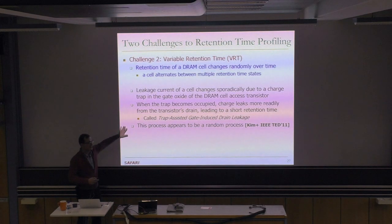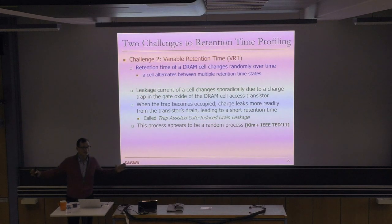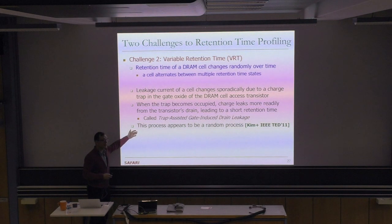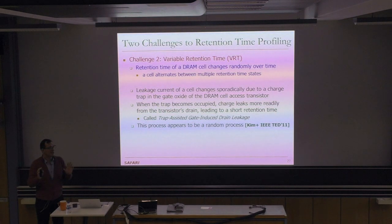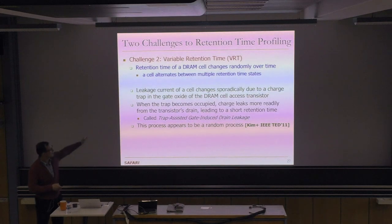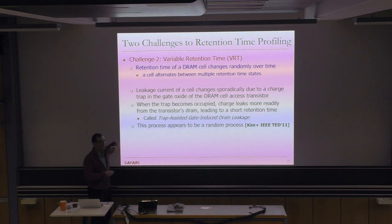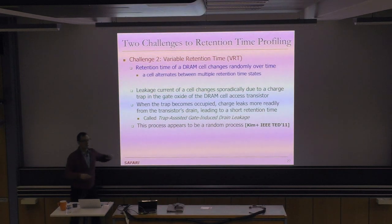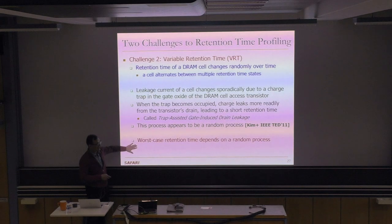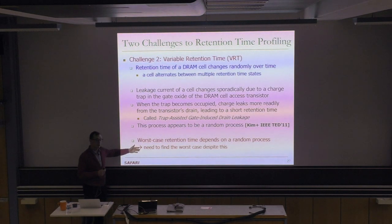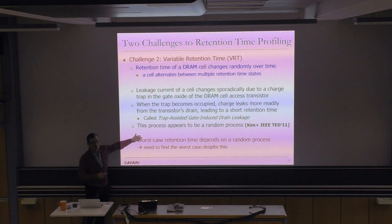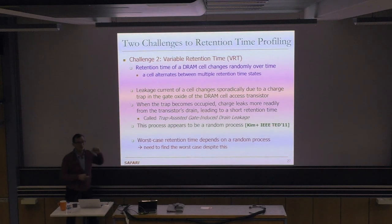Variable retention time is getting worse with scaling — newer devices see more cells with this behavior and the spread is increasing. You may need to test DRAM for days to find the minimum retention time: a cell may retain data for hundreds of seconds for three days, then randomly that charge trap becomes occupied and the retention time drops to eight milliseconds. You don't want to be testing DRAM for a single cell for three days. That's the difficulty — worst-case retention time depends on a random process.